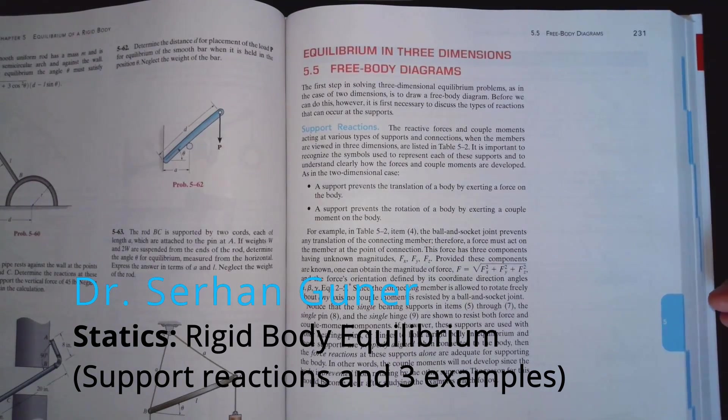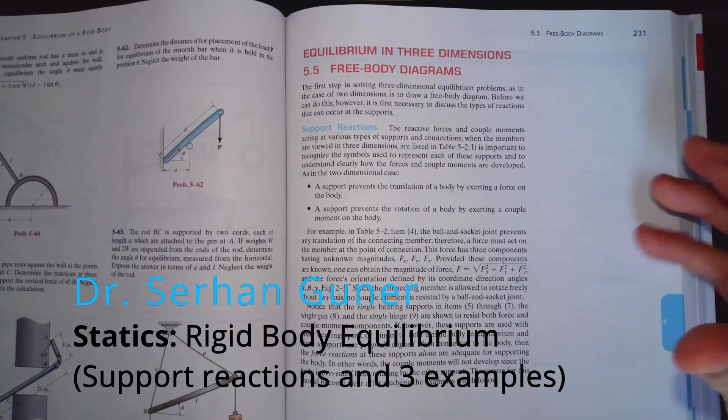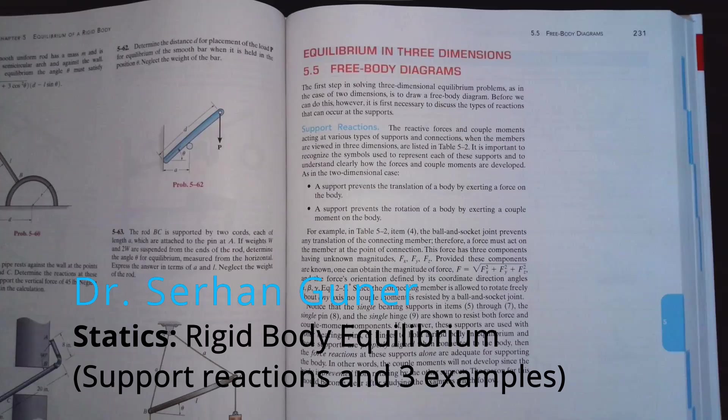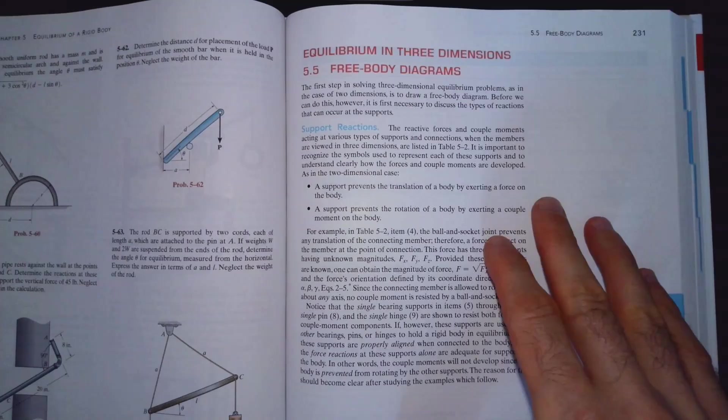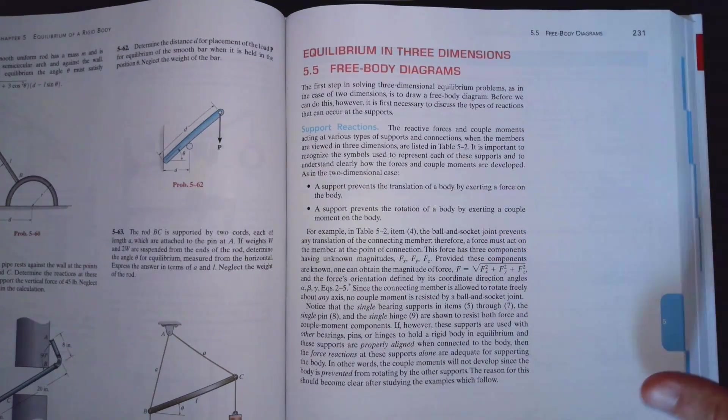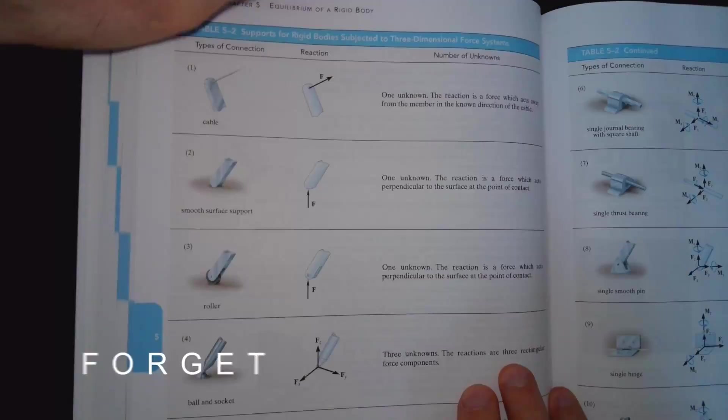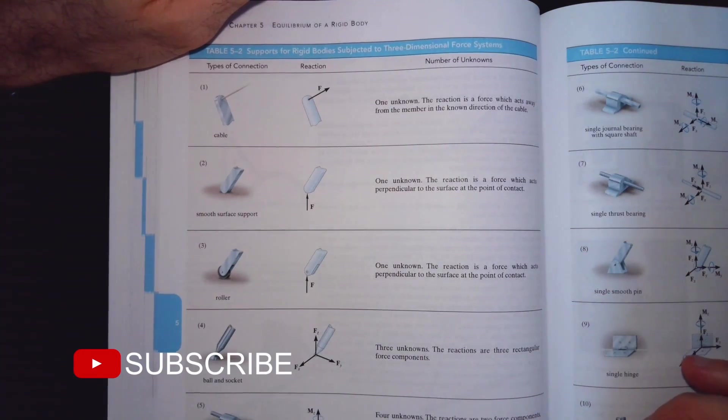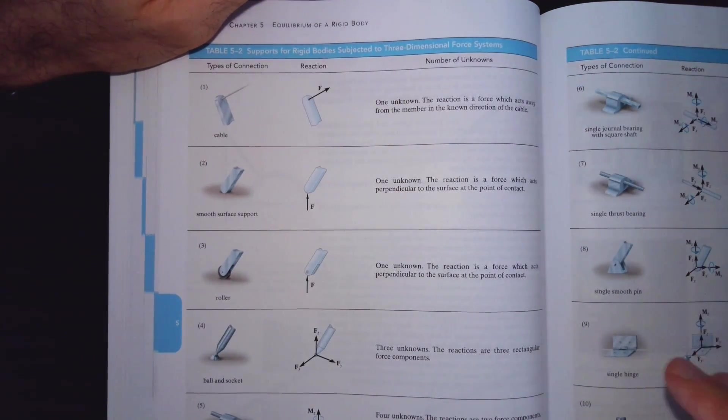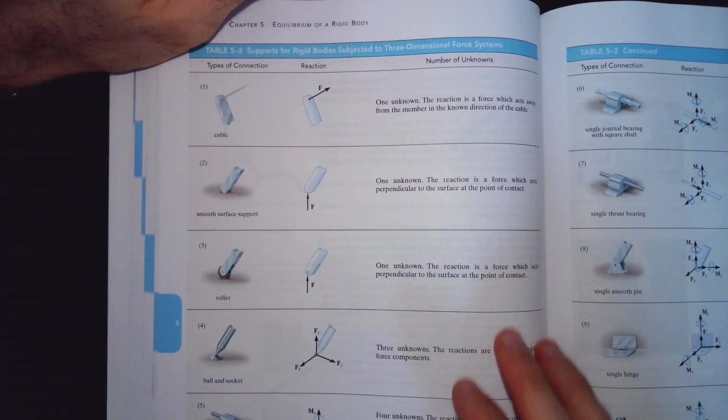Hi everyone, we have been studying three-dimensional topics. We have seen equilibrium of a particle, we have learned the dot product, cross product, triple product part by part to solve rigid body questions in three dimensions. Essentially we had three support conditions in two dimensions: pin support, roller support, and fixed support. In three dimensions it's the same concept but you have more components.